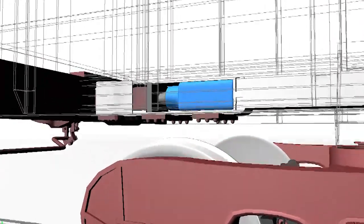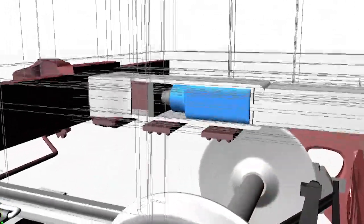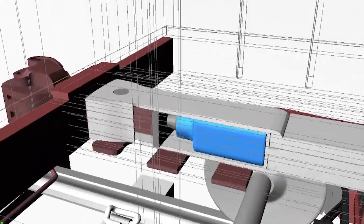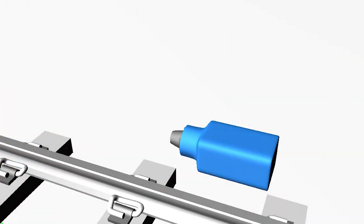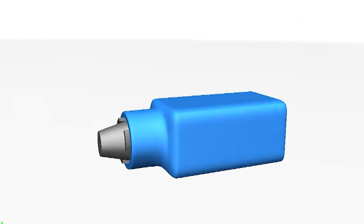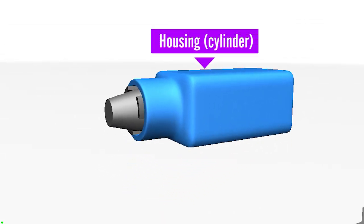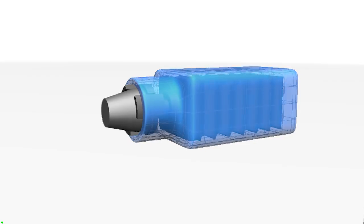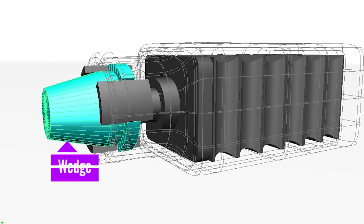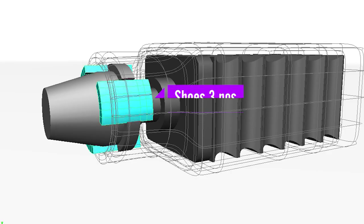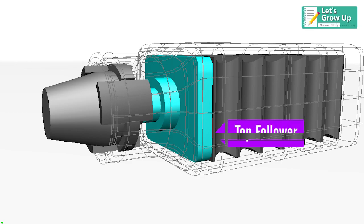Let's see the different components of RF 361 draft gear: housing or cylinder, wedge shoes, three nose, top follower, rubber pads, elastomer unit, etc.